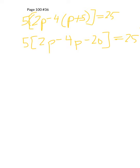Now, when you're inside the brackets, there's a little bit of simplifying that can be done. The 2p minus the 4p, that part right there simplifies to negative 2p. So we have 5 times negative 2p minus 20 equals 25.